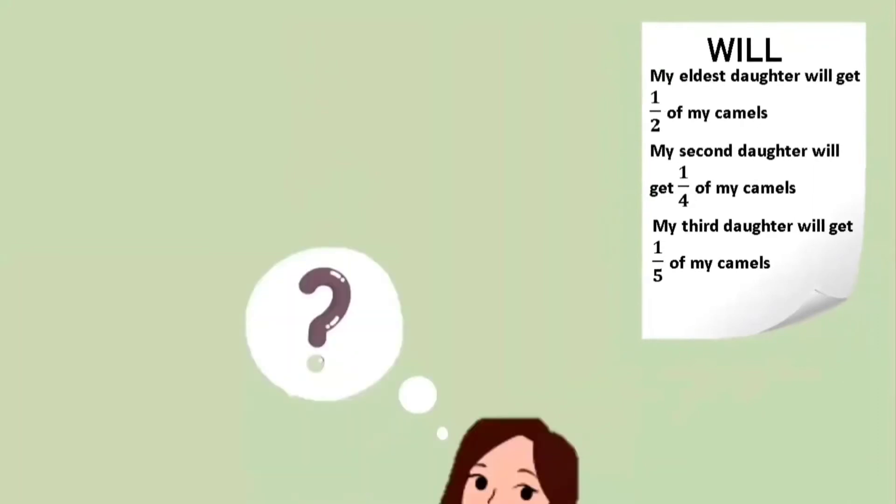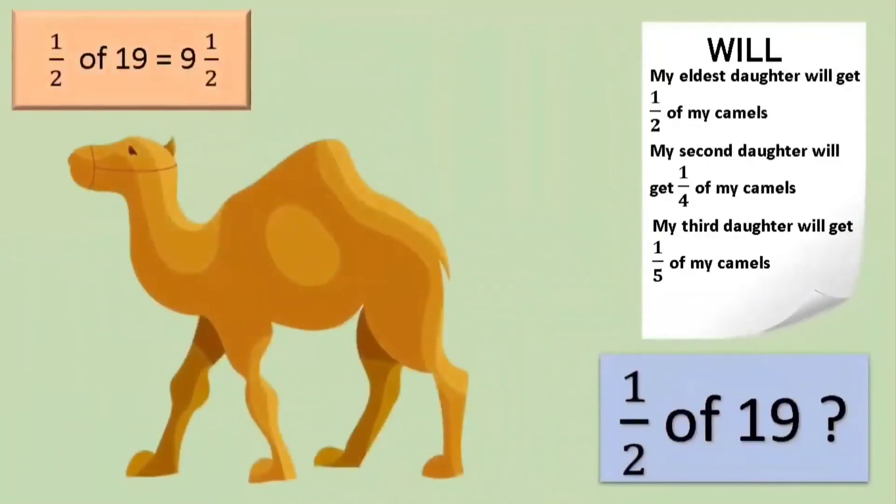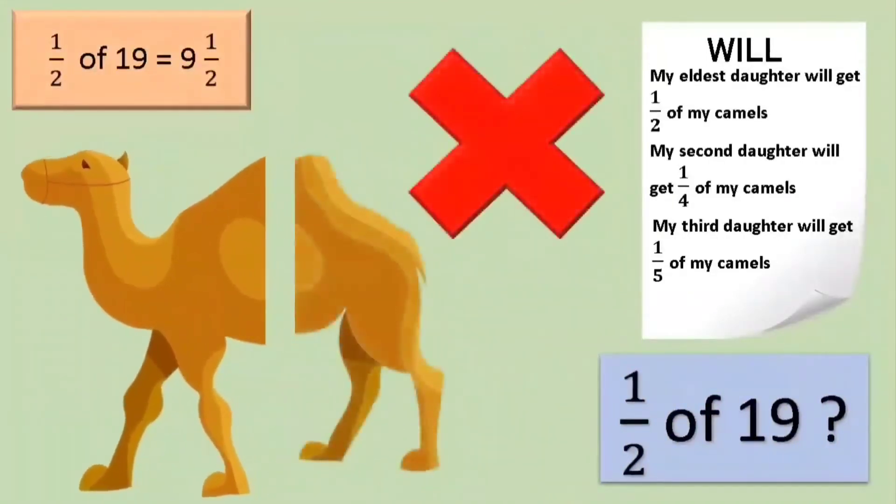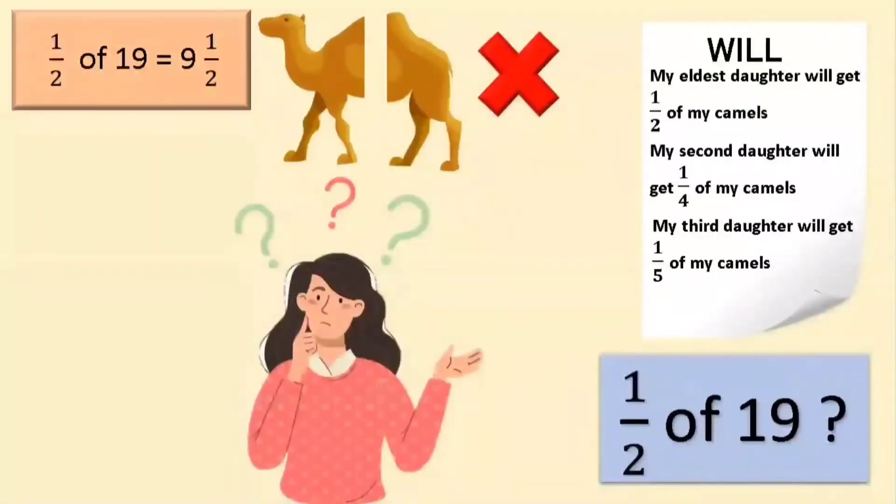The daughters were really puzzled. How can I get half of the 19 camels? Asked the eldest daughter. Half of 19 is 9 and a half. But we can't cut the camel. The second daughter said. That is right. But what will we do now? Asked the third daughter.